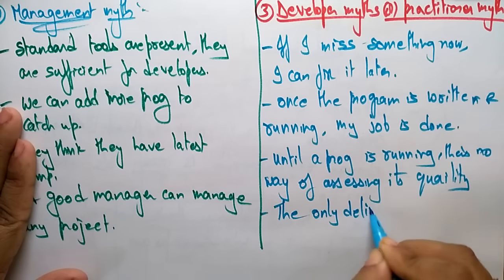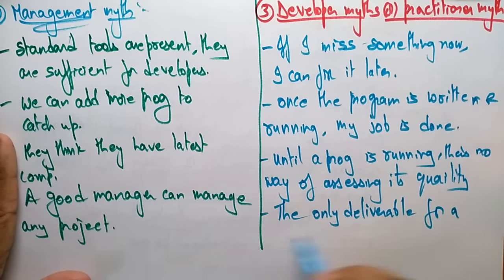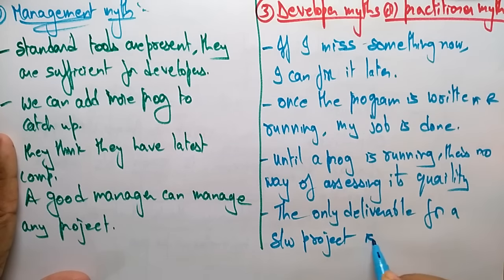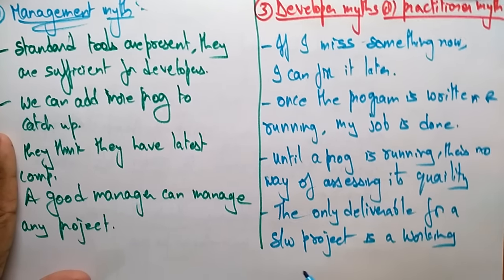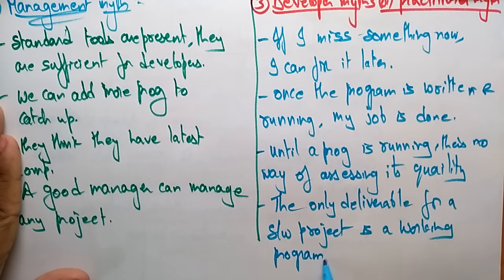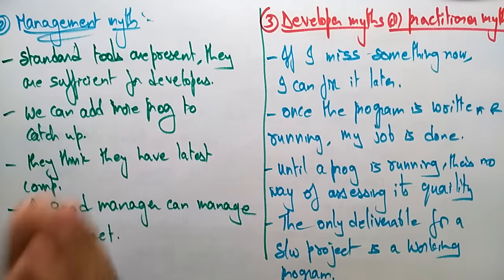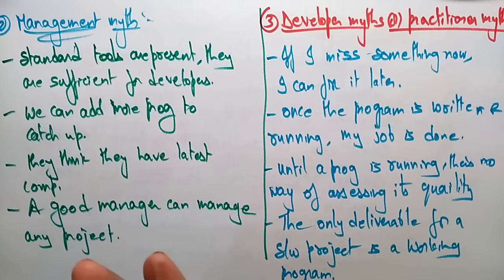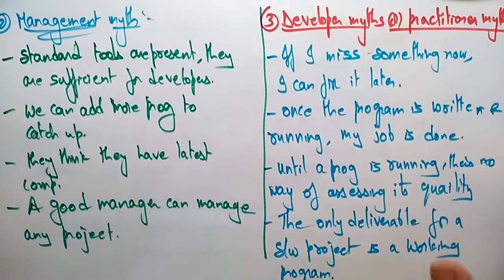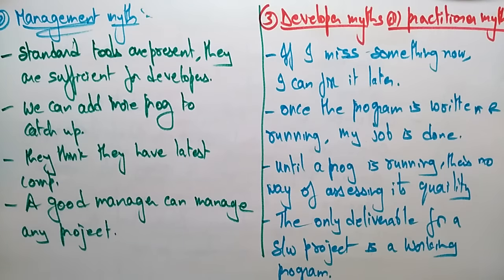And the developer believes that the only deliverable for a software project is a working program. These are all three different types of software myths: customer myths, management myths, and developer myths — covering what each group thinks about the software, the company, and the project. Thank you.